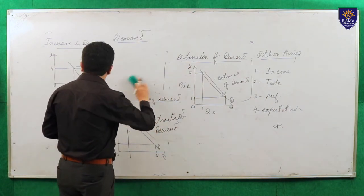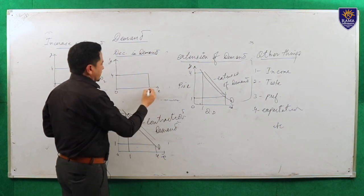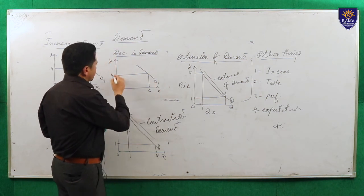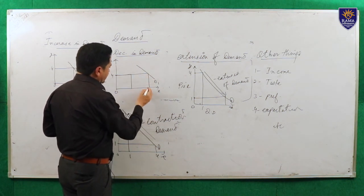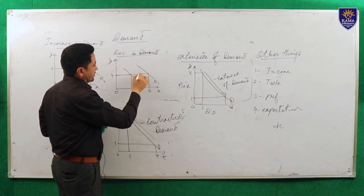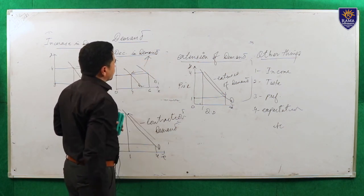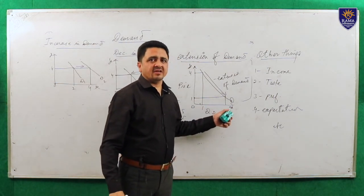The next part is decrease in demand — it is just the opposite of increase in demand. When price is 4 and demand is 6 — that is D1 — at the same price, with change in other factors, demand shifts backward from 6 to 4, becoming D2. So it shifts backward from D1 to D2. This is called decrease in the demand curve, and it happens due to change in other things: income, taste, preferences, and expectations.